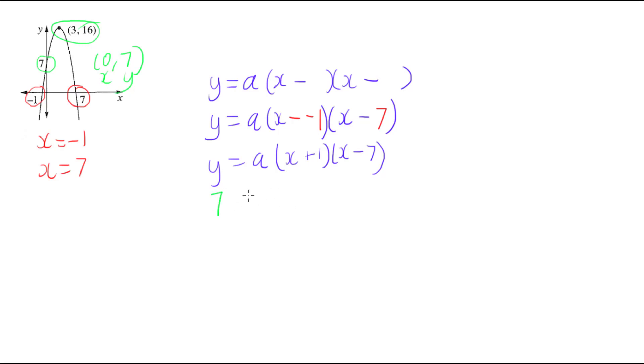So I'm going to have 7 equals an unknown a times x, which is 0, plus 1 times x, which is 0, minus 7.